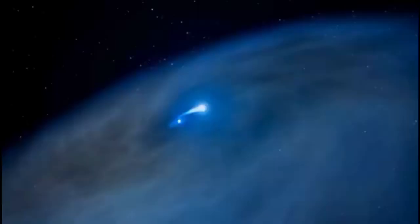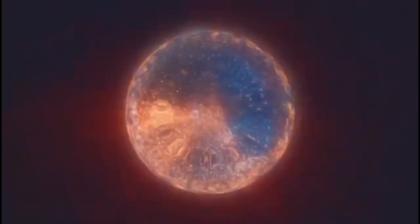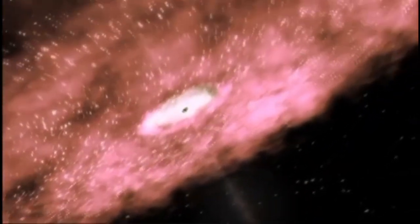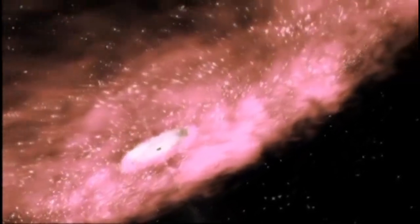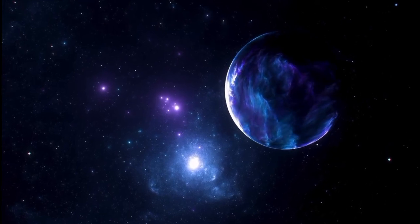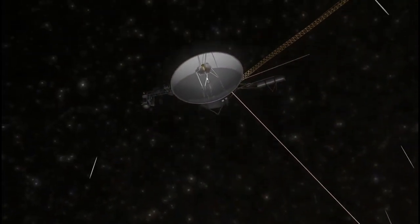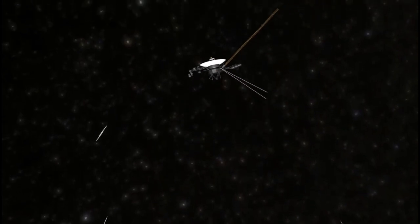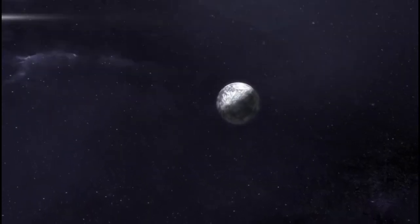Two primary types of supernovas exist. Type 1 supernova occurs in a binary star system where a white dwarf star accumulates excessive mass from its companion, leading to an uncontrollable nuclear reaction. Type 2 supernova, the fate anticipated for Betelgeuse. This type transpires when a massive star, significantly larger than our sun, depletes its nuclear fuel, triggering a colossal explosion.